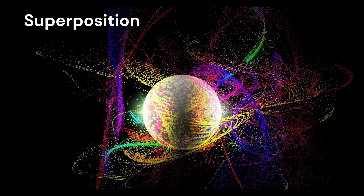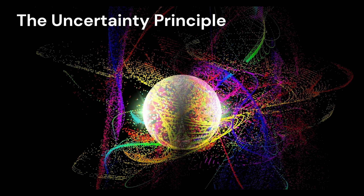Two, superposition — a term used to describe an object as a combination of multiple possible states at the same time. Three, the uncertainty principle. This is a mathematical concept that represents a tradeoff between complementary points of view. In physics, this means that two properties of an object, such as its position and velocity, cannot both be precisely known at the same time. If we precisely measure the position of an electron, for example, we will be limited in how precisely we can know its speed.